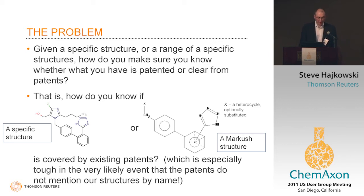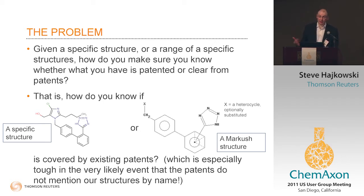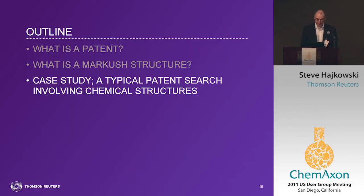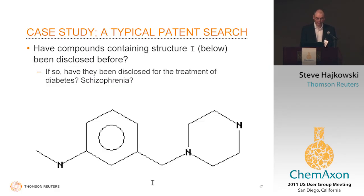This gives rise to the question: if we want to find and be able to search these Markush structures, how can we do that? If we have a particular structure we're interested in — maybe thinking it could be a potential new drug — how do we know whether that's present in the existing patent space? Our query structure could be a specific compound, or indeed it could be a Markush structure that we're trying to find matches for within patents. Here's the target compound — this is what we're trying to find within the patent space: has it been disclosed before?